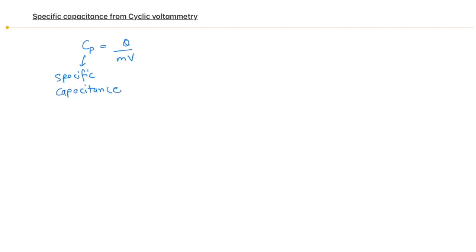Q is charge, m is mass, V is voltage. Here mass is the mass of material which is in the electrolyte, and we are using cyclic voltammetry.